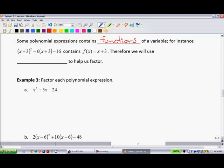So some polynomial expressions contain functions of a variable. For instance, (x plus 3) squared minus 6 onto (x plus 3) minus 16 contains this x plus 3. So if you notice, you guys were used to seeing this kind of like, I could write this as x squared minus 6x minus 16. You'd feel more comfortable with that. What I've done is I've used functions here and I've substituted that x plus 3 in for all those x's.